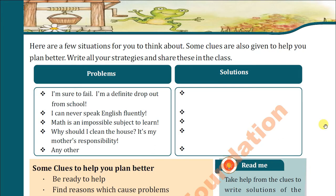If someone is saying 'I am sure to fail, I am a definite dropout from school' — what will you say? You can think: that's not a big problem. If you are failing in a certain subject, it means you are not understanding that subject properly, or you are not doing practice properly, or you are not giving full time to your studies. So you must take help from one of your friends, your teachers, or your family members to overcome your issue. Then you will not be dropped out from school. First of all, we have to analyze the problem, then we can find the solution. In this way you can motivate your friend to overcome their issues with a little effort.